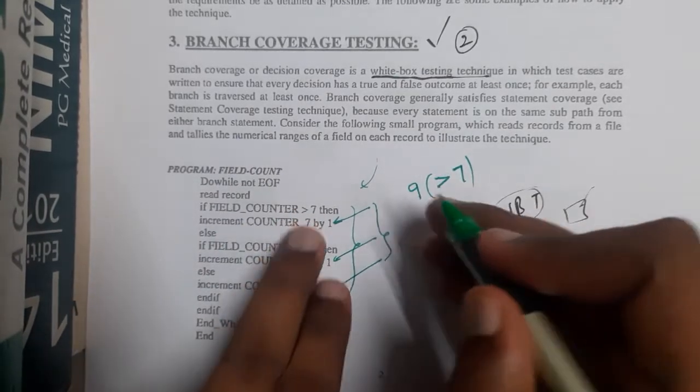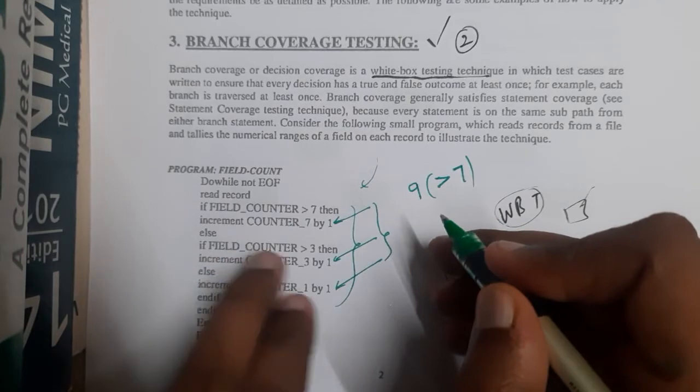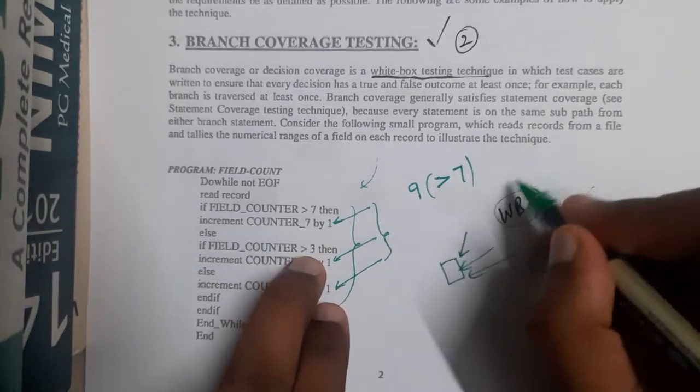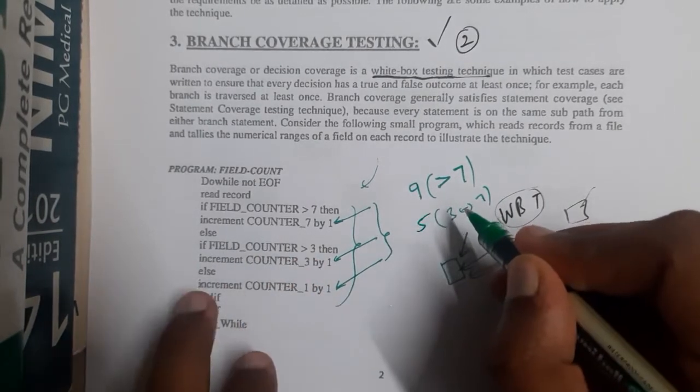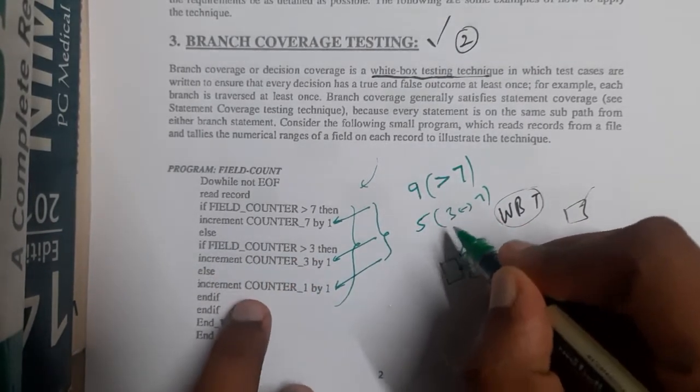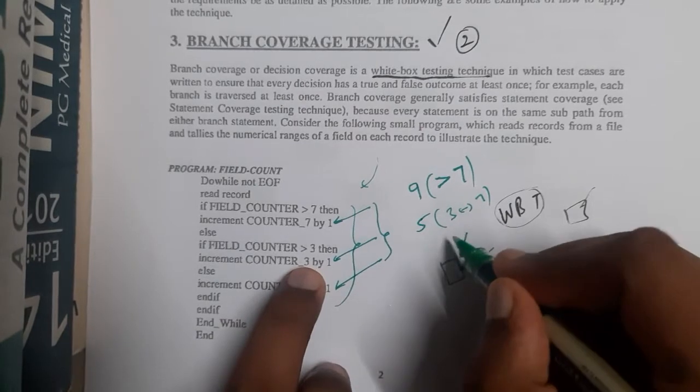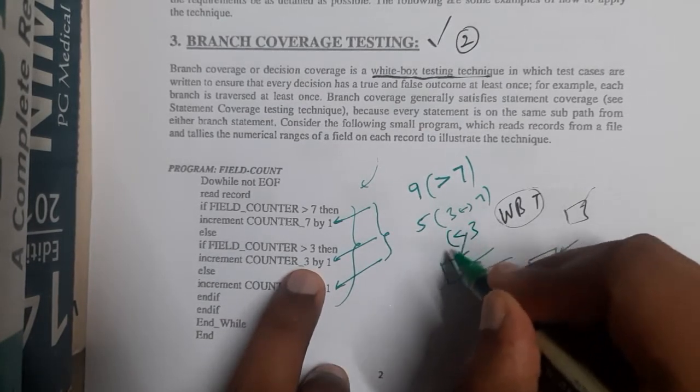The second condition is greater than 3, so I will be giving that in between 3 and 7. Let us assume I gave 5. And the last time it is else, so anything less than 3. If I give less than 3, if I give 1.